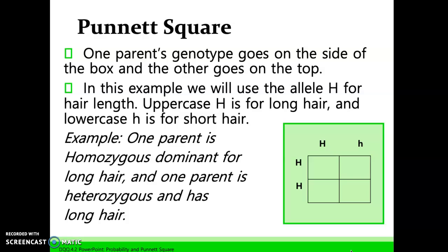We're going to complete a Punnett square showing a monohybrid cross for a single trait. One parent's genotype goes on the side of the box and the other goes on the top — we always use a four-square box. In this example, we're using the allele H for hair length: uppercase H for long hair and lowercase h for short hair. One parent is homozygous dominant for long hair and one parent is heterozygous with long hair. The homozygous dominant parent goes on the side, and the heterozygous parent goes along the top.